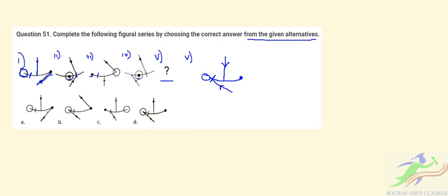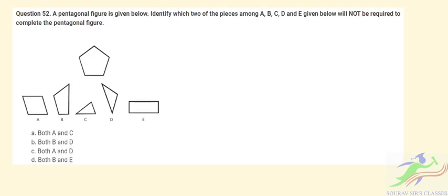Now check with the options. Only option D will be the correct option. This is totally by observation, as I have told in some previous videos. First we have to do this by observation, identify each of the elements, each of the shapes, then draw your own figure and check with options. For Question 51, the particular answer is option D.